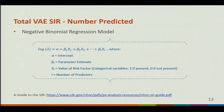The negative binomial regression model has alpha, which is the intercept; the beta value, which is the parameter estimates; the X value, which represents the presence or absence of the risk factor; and an i, which is the number of predictors.